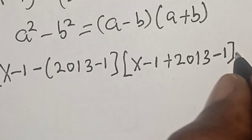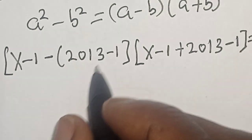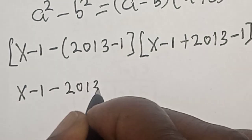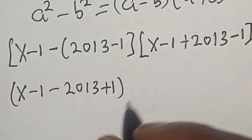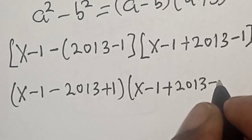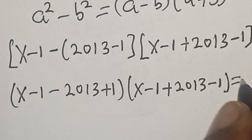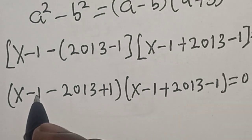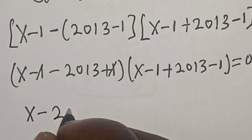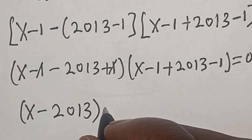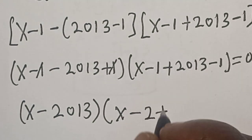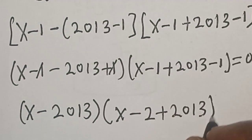Everything is equal to zero. We have (x - 1) minus 2013 plus 1, multiplied by (x - 1) plus 2013 minus 1, equal to zero. Here the minus one and plus one cancel, giving us (x - 2013) multiplied by (x - 2) plus 2013 equal to zero — that simplifies to (x - 2013) multiplied by (x + 2011) equal to zero.